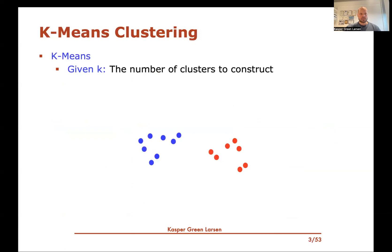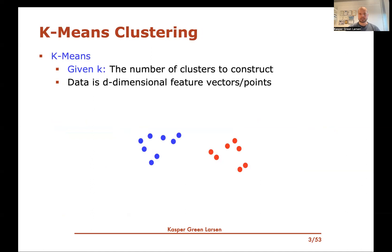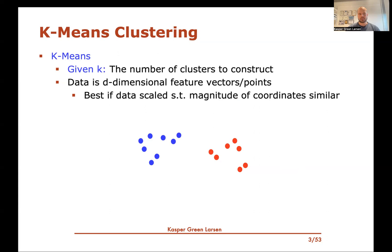In k-means clustering, we're given k as part of the input — this is something you choose when you run the algorithm, a hyperparameter. K is the number of clusters that you would like to construct. The data consists of d-dimensional feature vectors, so they're just numerical points — no categorical features. It's best for k-means clustering that the data is scaled so that the different coordinates of your feature vectors have roughly the same magnitude, maybe ensured by some reasonable scaling of the input first.